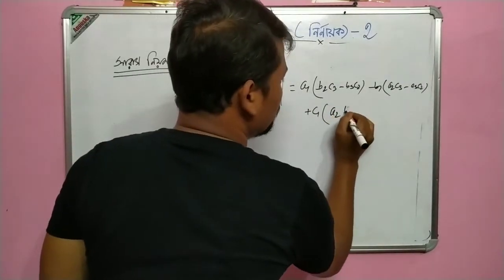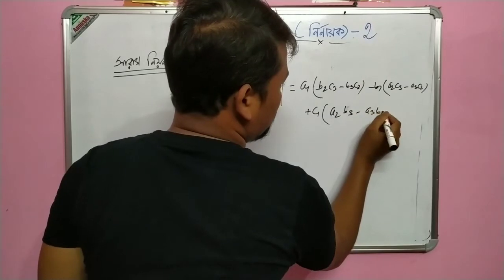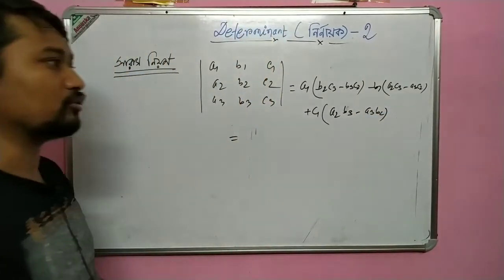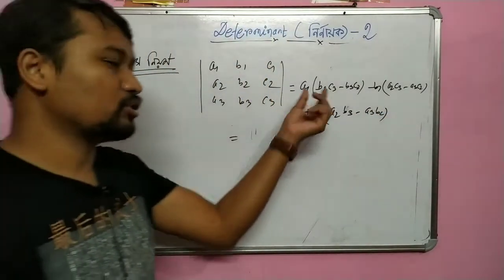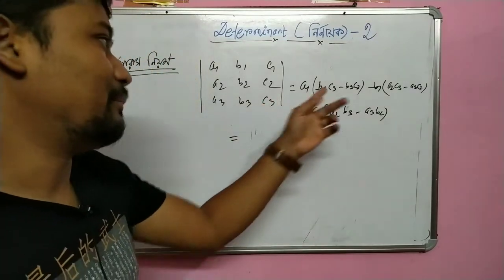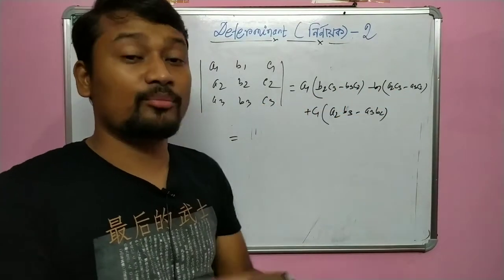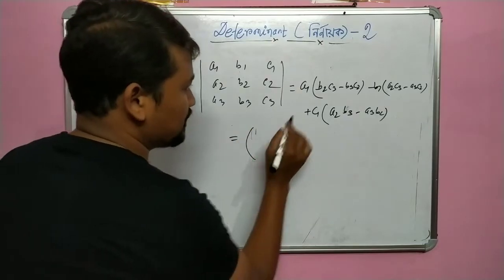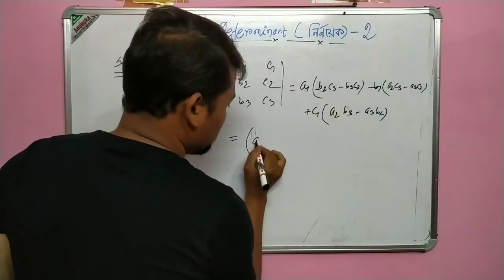The alternative form of the expansion gives us terms: a2·b3 and a3·b2. So the coefficient before a2 involves a2·b3 minus a3·b2.